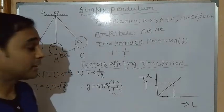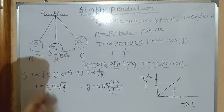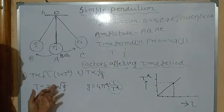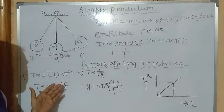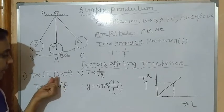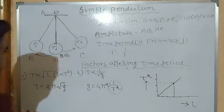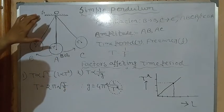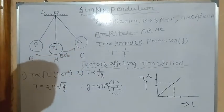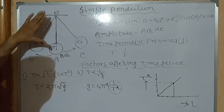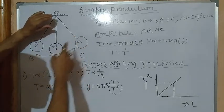Now we will see the factors on which time period depends. First, time period is directly proportional to the square root of the effective length. This means if the effective length increases, time period also increases. If we take a short string where the effective length is very small, we can assume it will swing very fast.